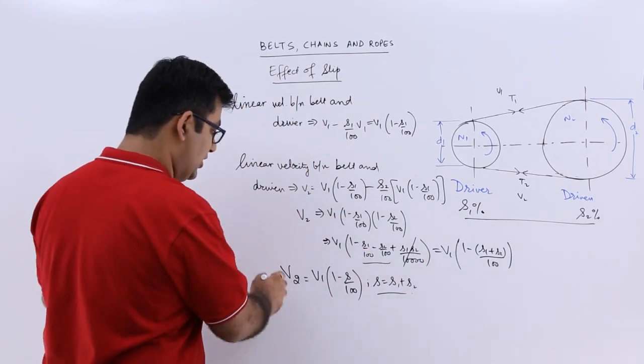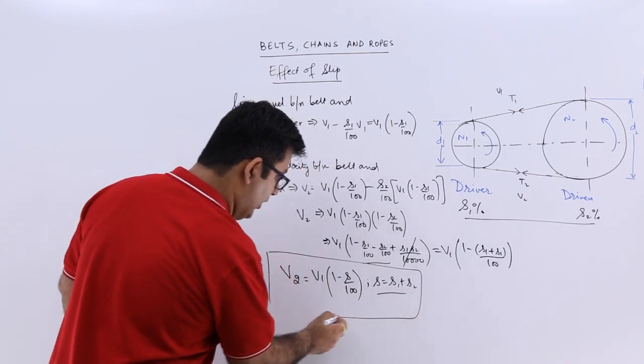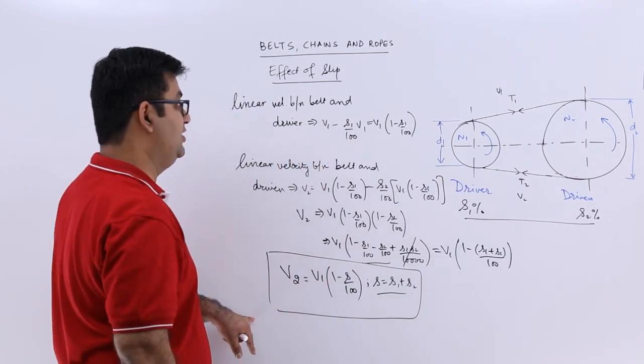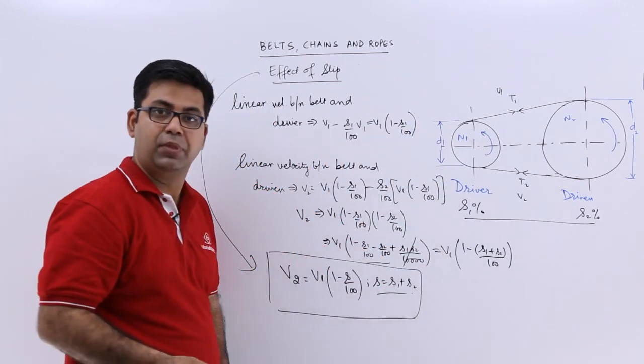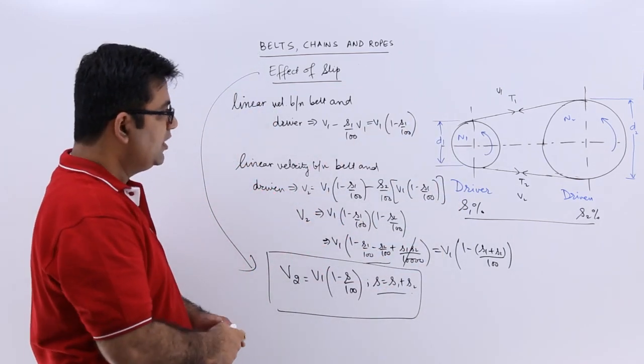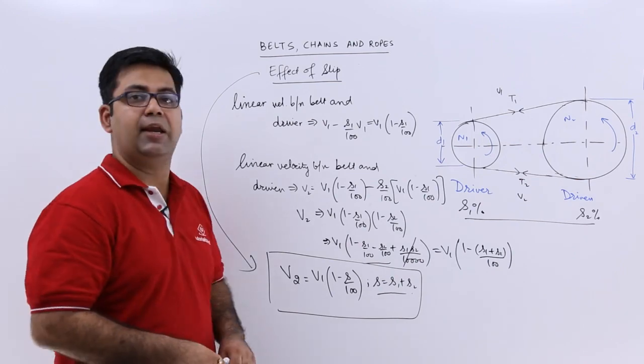So this is how we recognize or compensate for the effect of slip in between the belt and the pulleys. I hope you got this mathematical analysis.